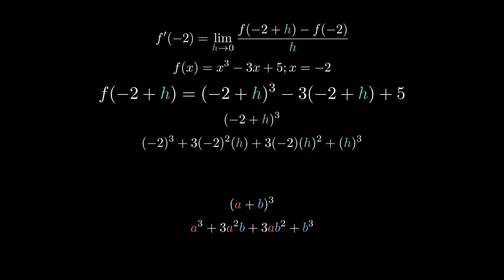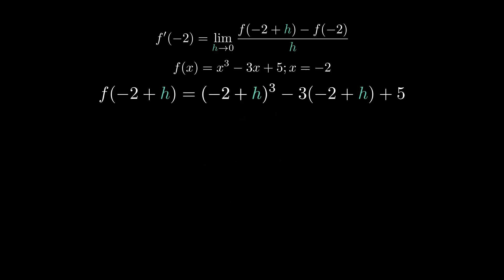So we're going to clean this up. Negative 2 cubed is negative 8, and then we have 3 times negative 2 squared times h. Negative 2 squared is 4, and 4 times 3 is 12, so that gives us 12h. We'll have negative 8 plus 12h, and then we have plus 3 times negative 2 times h squared. Well, 3 times negative 2 is negative 6, so that gives us negative 6h squared. And lastly, we have h cubed. So that'll leave us with negative 8 plus 12h minus 6h squared plus h cubed. Now that we've expanded negative 2 plus h cubed, we can rewrite it as negative 8 plus 12h minus 6h squared plus h cubed.